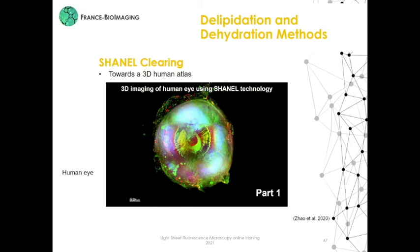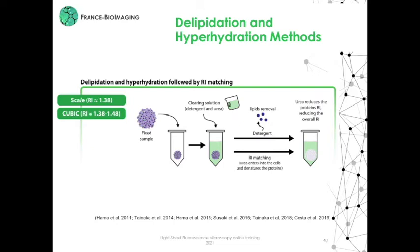The second family of clearing methods is based on delipidation and hyperhydration using hydrophilic solvents. The most well-known is the CUBIC method. First we have to fix the sample. The clearing here is based on urea and detergent: detergent for lipid removal and urea for RI matching. Urea enters the cells and denatures the proteins, reducing the protein RI and ultimately the overall RI.